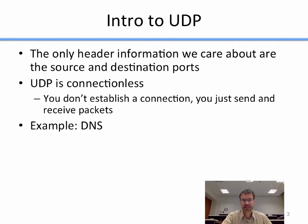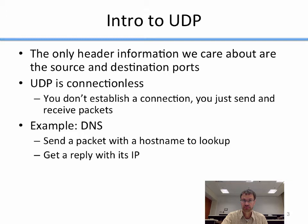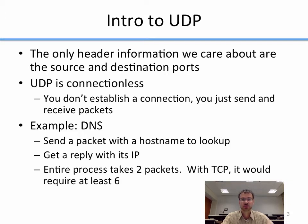An example application of UDP is DNS, the domain name lookup service. The way DNS works is you send a UDP packet to port 53 of a DNS server with a hostname to look up, and it replies with a packet containing the IP address of that hostname. This entire process takes only two packets — one to initiate the request and one to get the reply. With TCP, this would require at least six packets: three to initiate the connection, one to send the request, one to send the reply, and one to finish and reset the connection.